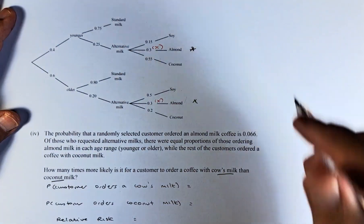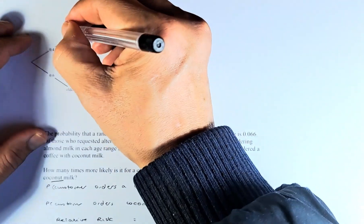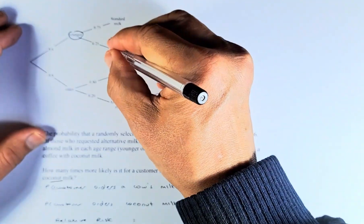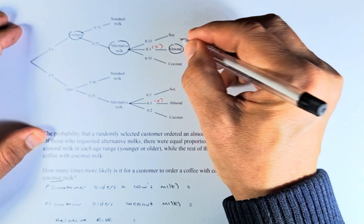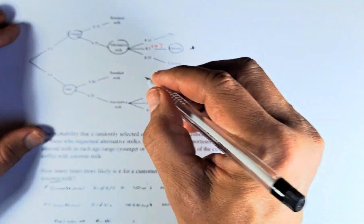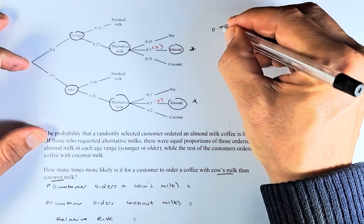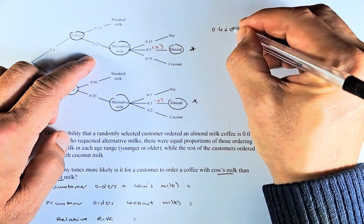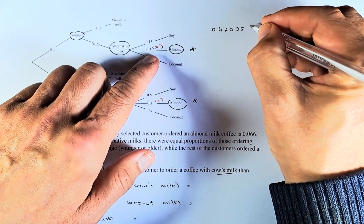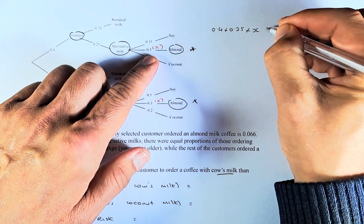So to calculate the almond, we use this younger alternative milk and almond or older alternative milk and almond. So we are going to add 0.4 times 0.25 times x because the almond is unknown.